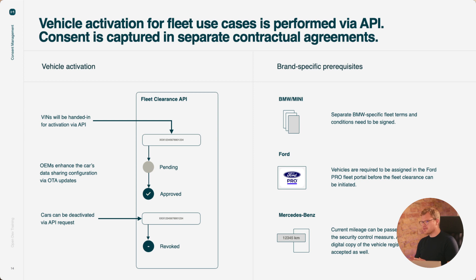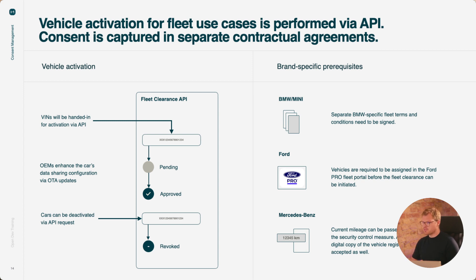All fleet vehicles are activated through an API, where you pass in the VIN and the brand, and that starts the activation process. First, the vehicle goes into a pending state, and then as soon as it gets activated on the manufacturer side it goes to approved. That is the step where you will start to receive data, either pushed to you or, if you are using polled APIs, you can retrieve data whenever you wish to get an update.